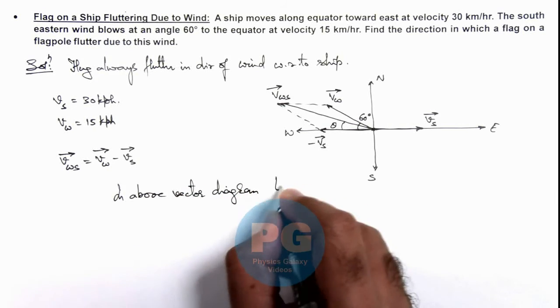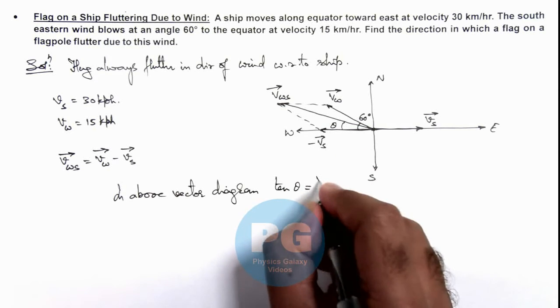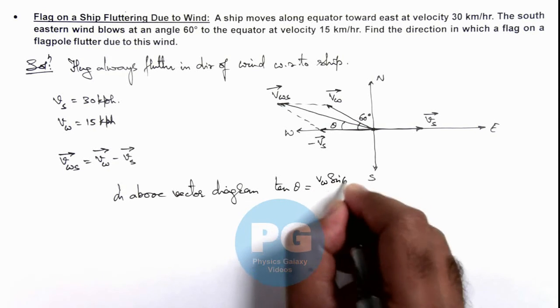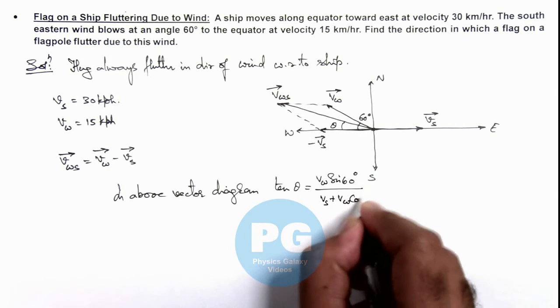We can directly write the value of tan theta as Vw sin 60° divided by Vs plus Vw cos 60°.